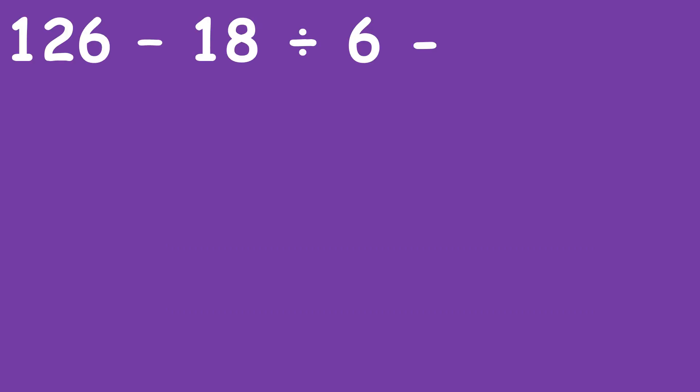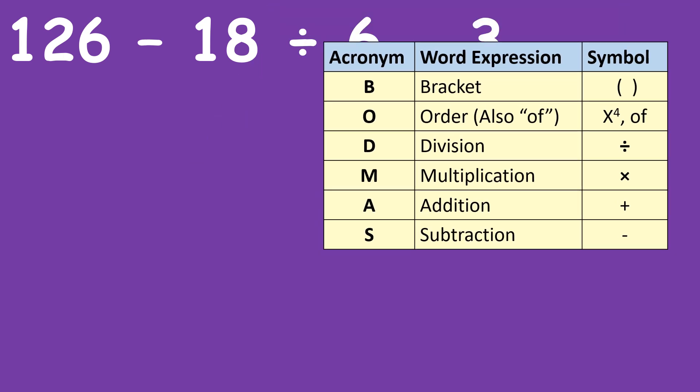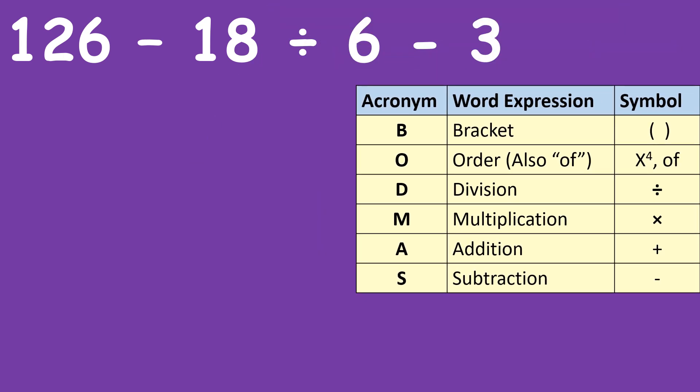So we have 126 minus 18 divided by 6 minus 3 and we will be using BODMAS where we have the brackets, the order, that is whether it's an exponent or power and also of, of meaning multiplication in some way that is 50% of, 20% of, that means 20% times a certain thing. But we now also have division, multiplication, addition and subtraction. Now looking at the above problem,